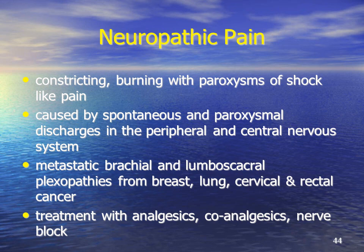Classically one wants to get a history of a burning or shock-like pain, and this is caused by spontaneous and paroxysmal discharges in the peripheral and central nervous system. You may have problems with brachial and lumbar sacral plexopathies — these may be because of breast and lung cancer in the brachial plexus, and cervical and rectal cancers involving the lumbar sacral plexus. The treatment for nerve pain is with standard analgesics including opioids, used in conjunction with co-analgesics such as tricyclic antidepressants or anticonvulsants, and in some situations nerve blockade.